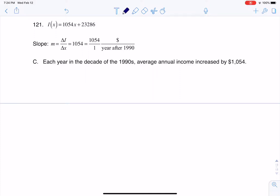Hey Math 31, I had a question coming out of section 4.1 number 121. This is where we were given an equation for the average income for the years 1990 through 1999, told it was a linear function, and the units we were given was X as the number of years after 1990.